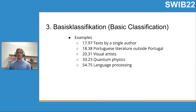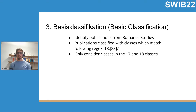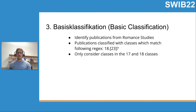Here are some real examples, with labels translated into English. The class 17.97 would be 'text by a single author'; 18.38 is 'Portuguese literature outside Portugal'. There are also examples for art, physics, or computer science. We use specific classification codes to identify publications about Romance studies in our catalogue, using the regular expression 18.20 to 3. Since we are analyzing philology publications, we only consider subclasses under the main classes 17 and 18, which are the main classes for the philologies.